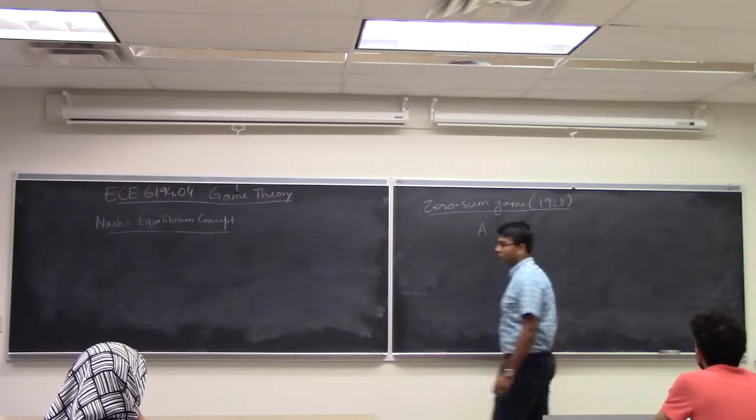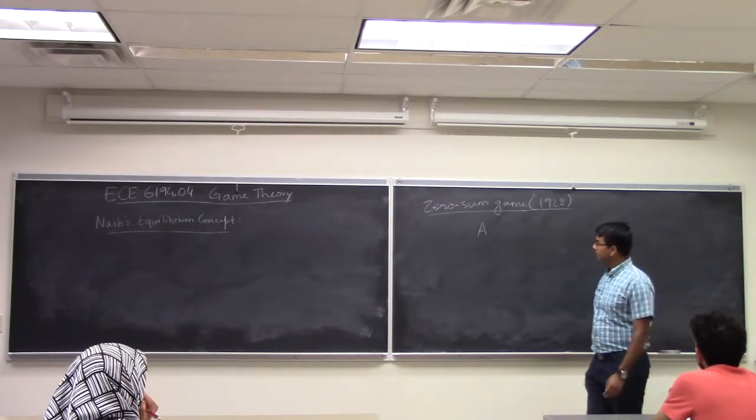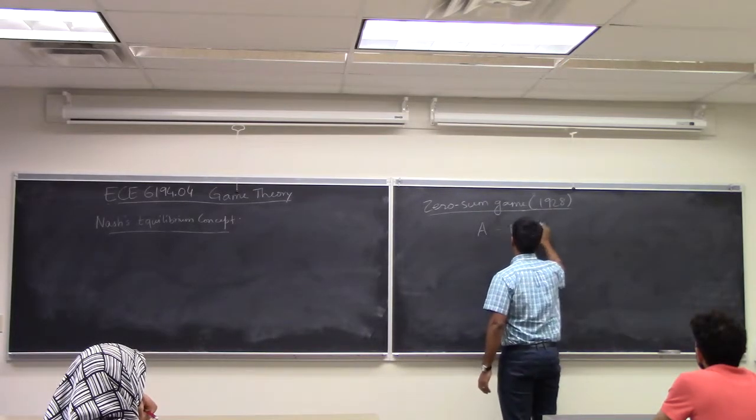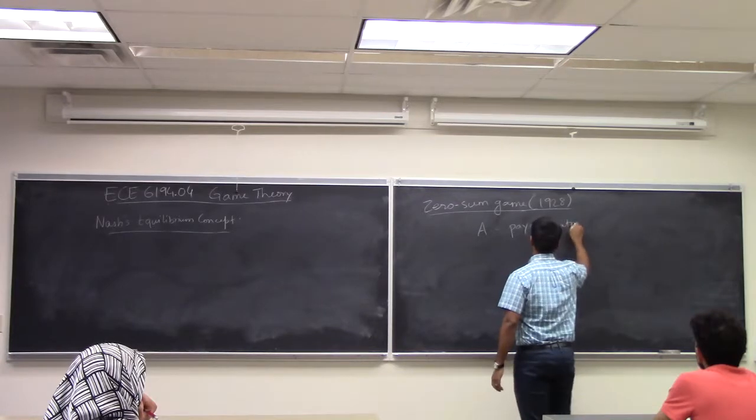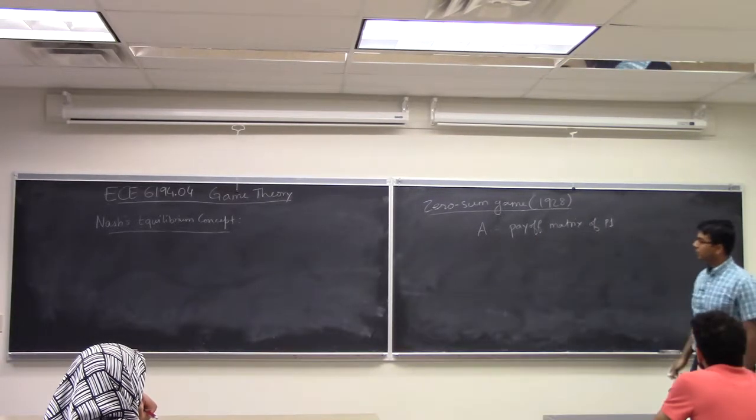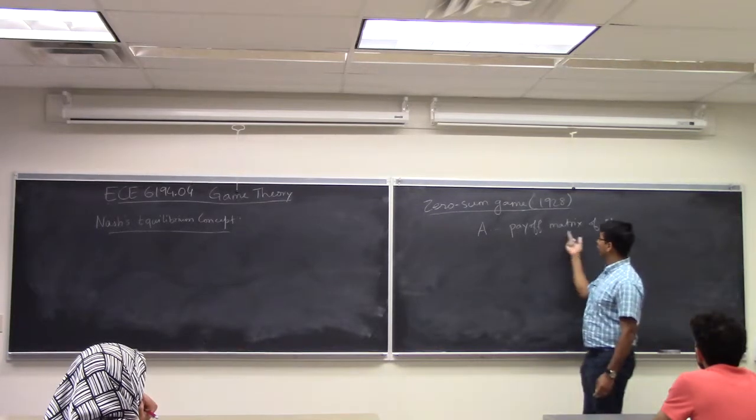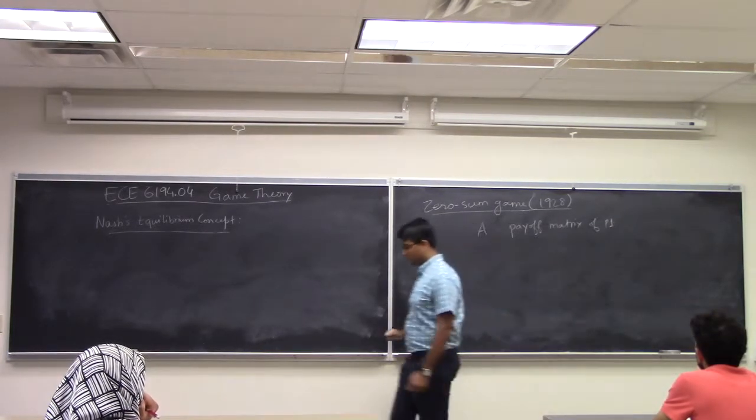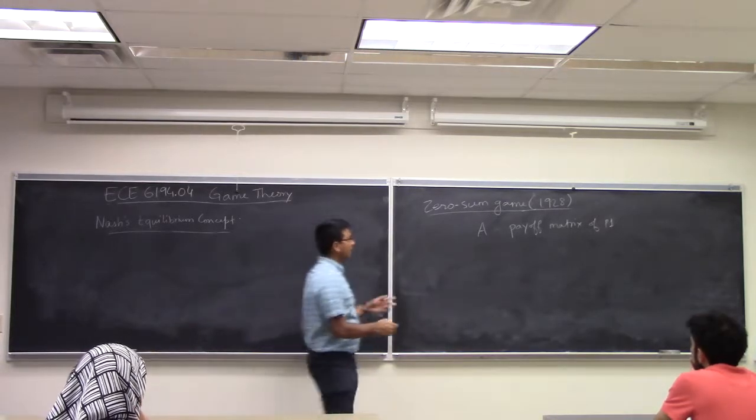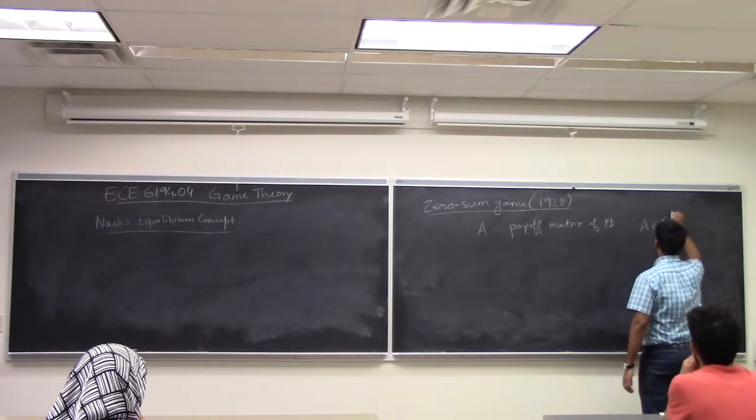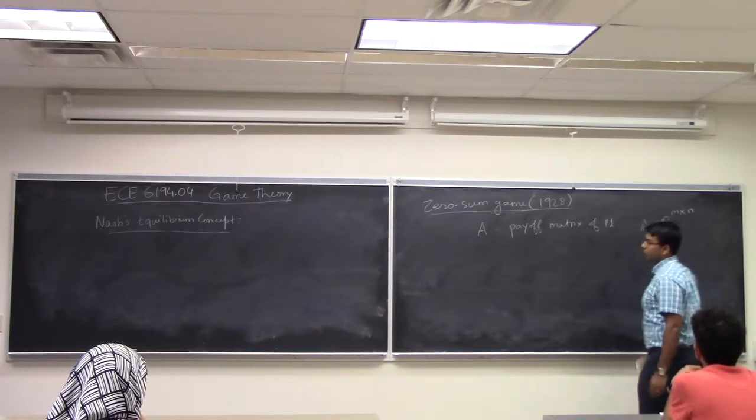You have a payoff matrix of player 1 which is equal to A, that is the payoff matrix of player 1, and by definition because it is a zero sum game, the payoff matrix of player 2 is negative of A. And A is a matrix in R m cross n.